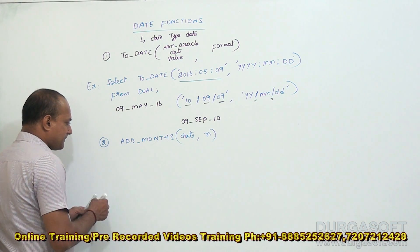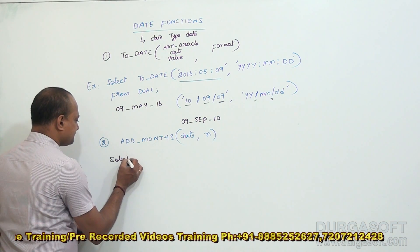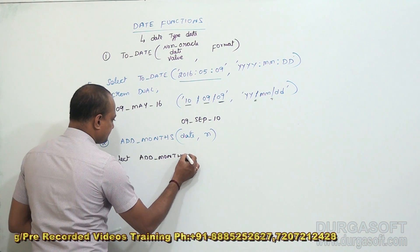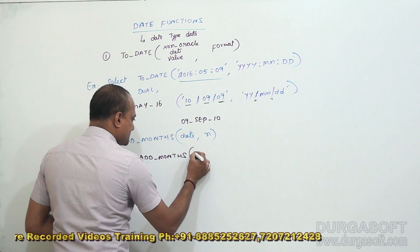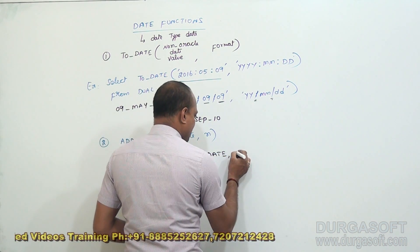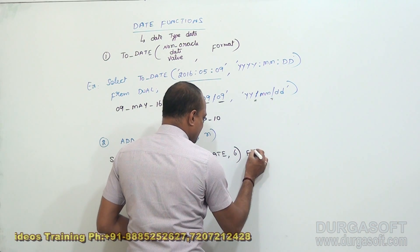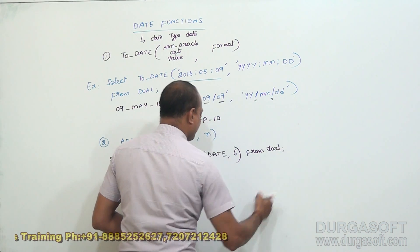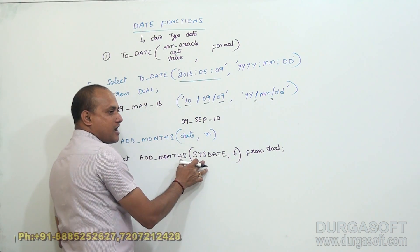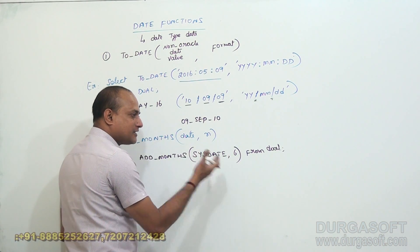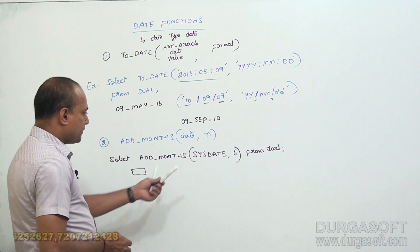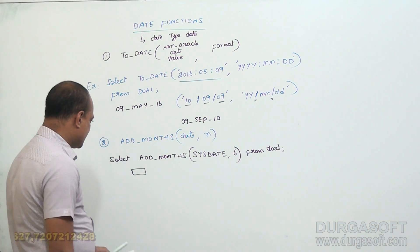Example: SELECT ADD_MONTHS(SYSDATE, 6) FROM DUAL. Here I'm not submitting a direct date value — I'm using SYSDATE. Six months will be added to the system date, and whatever the resultant date is, that will be displayed. You can specify any number of months.